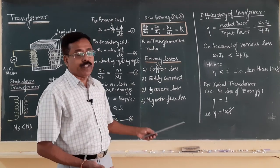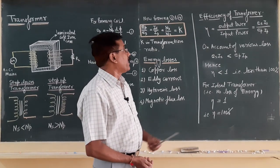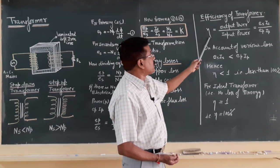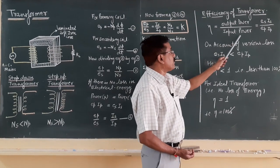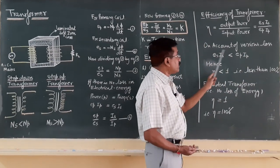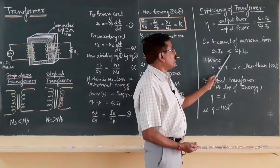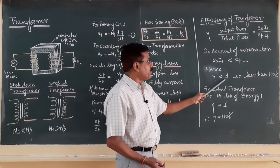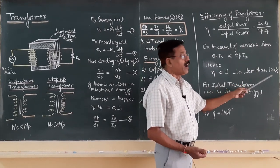Due to these losses, we cannot say that the efficiency of a transformer will be 100 percent. The formula for efficiency of a transformer is output power upon input power, that is Es × Is divided by Ep × Ip. On account of the various losses discussed, the output power is always less than the input power, meaning the efficiency of the transformer is always less than 1, or less than 100 percent.